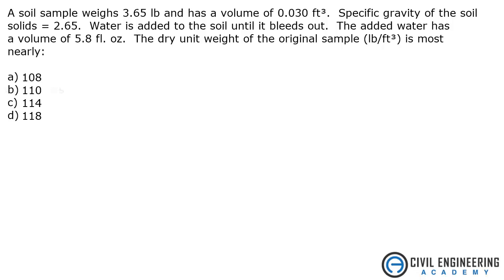A soil sample weighs 3.65 pounds and has a volume of 0.03 cubic feet. Specific gravity of the soil solids is 2.65. Water is added to the soil until it bleeds out. The added water has a volume of 5.8 fluid ounces. The dry unit weight of the original sample is most nearly...